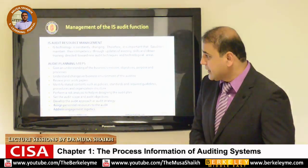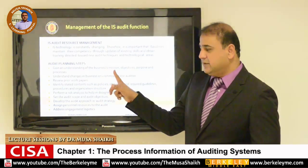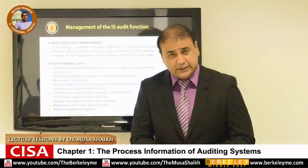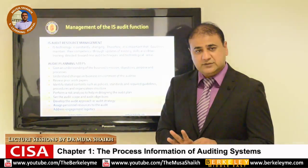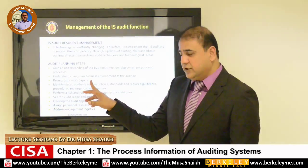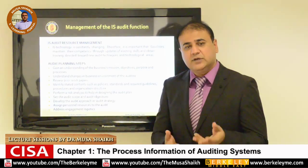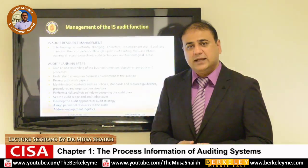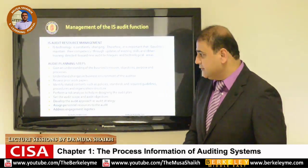Audit planning involves several steps. First, we should understand the business objectives and missions — what management is targeting. Then we understand the business environment, which gives an idea of audit requirements. We also review prior work papers to understand funding issues and past issues, so we can develop a strategy to address them in the future.